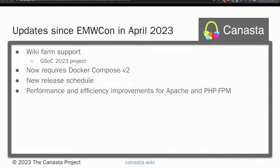Since April 2023 we've made a few notable changes. First, we revised our release schedule and versioning system to fit use cases requiring stability while ensuring access to new features. Second, we deprecated support for Docker Compose V1 and only support V2. Third, we fine-tuned the Apache and PHP-FPM configuration for better performance and scalability. Last but not least, we are excited to announce wiki farm support.